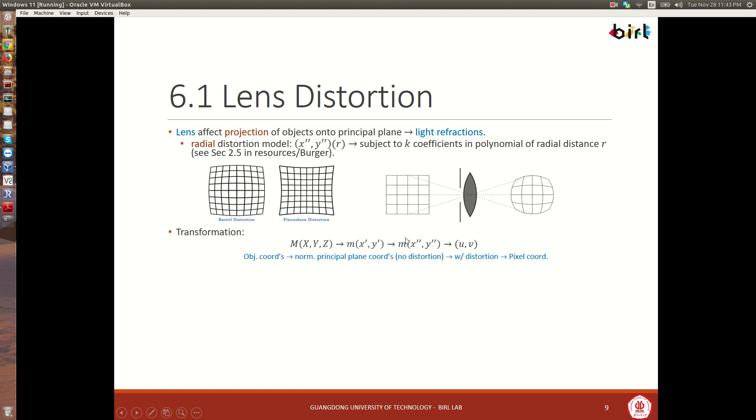So this equation is going to be a function of r, r squared, r to the power of 4, r to the power of 6. And each of those will have a coefficient. And really what we're looking then at is how do we go from the object coordinates to the principal plane or to the image plane with no distortion. And then, including the distortion, and then finally to the pixel coordinates. Okay?